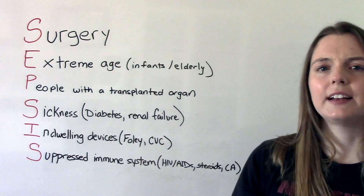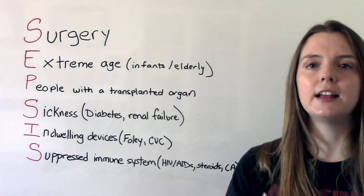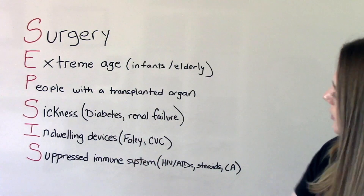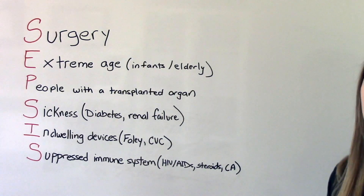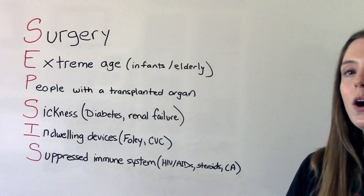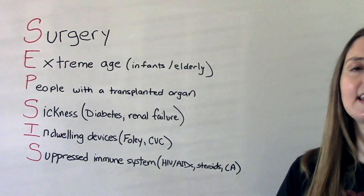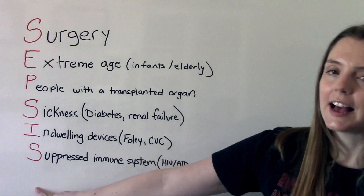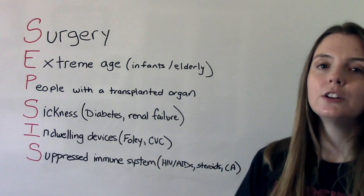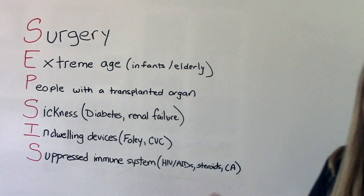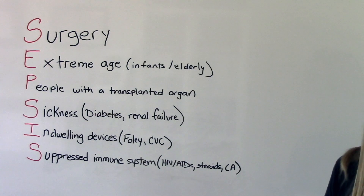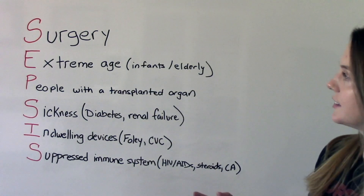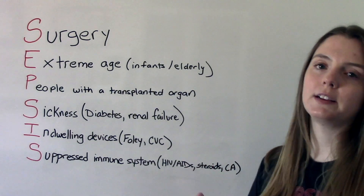S is for generalized sickness — people with chronic conditions that decrease their immunity and make them more susceptible, things like diabetes and renal failure. I is for having an indwelling device, such as a Foley catheter, a central line, or a trach — anything like that puts you at risk for infection. And the last S is for suppressed immune system: illnesses like HIV, AIDS, use of steroids, or cancer patients doing chemotherapy, which suppresses the immune system. Lots of things can put us at risk for getting septic and then that becoming septic shock.